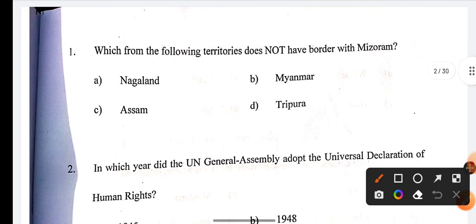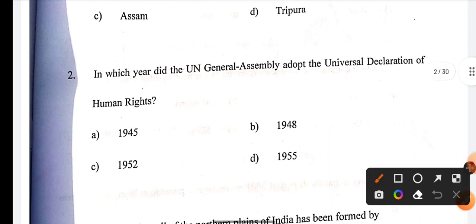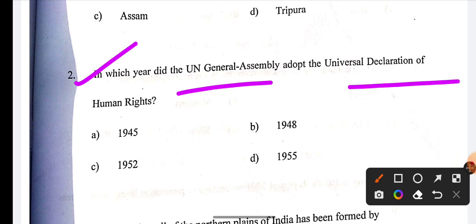Now the first question: Which of the following territory does not have border with Myanmar? The correct answer is Nagaland. Next question: In which year did the UN General Assembly adopt the Universal Declaration of Human Rights? The correct answer is 1948.